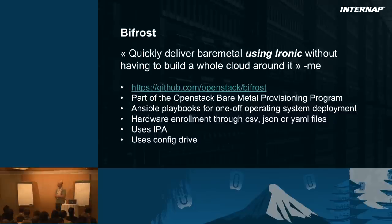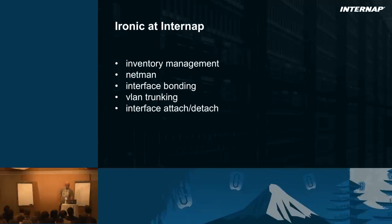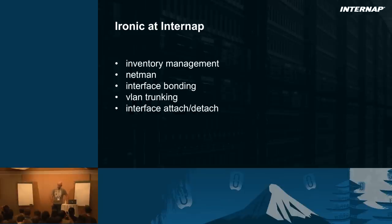Bifrost has hardware enrollment through a CSV file, uses IPA and config drive — all the good stuff. It's going to be a real Ironic deployment. Now, part two: Ironic at Internap. We'll delve into how we use it, what we do with it, and the changes we needed to make. Different sections: inventory management, Netman — a great open source product we came up with — and limitations we couldn't accept regarding interface bonding and VLAN trunking.